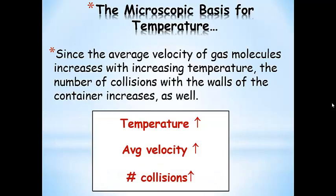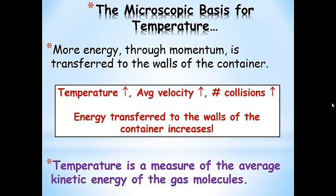Since the average velocity of gas molecules increases as we increase the temperature, it's easy to imagine that the number of collisions with the walls of the container increases as well. If they're moving faster, they hit more often and cover more territory. So as temperature increases, average velocity increases, number of collisions increases, and more energy through momentum is transferred to the walls. Temperature is a measure of the average kinetic energy of the gas molecules.